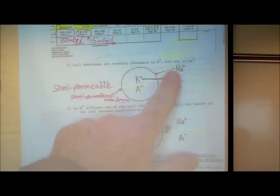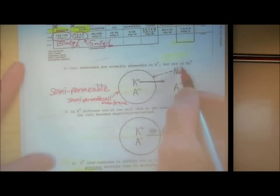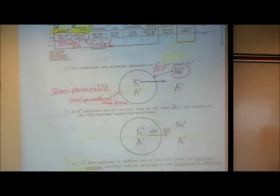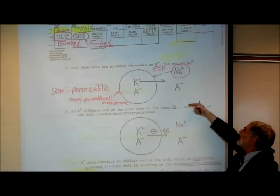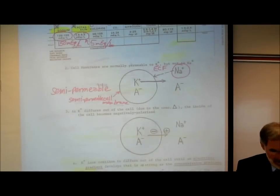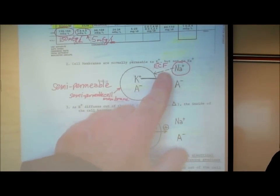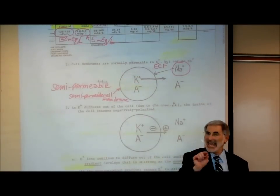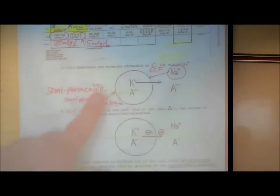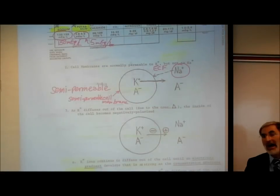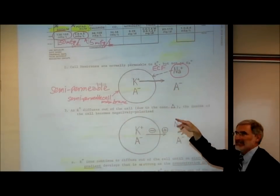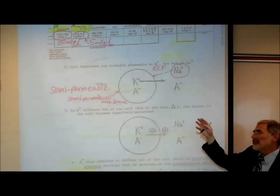The sodium ion channels are normally closed. There's a high concentration of sodium in the extracellular fluid and a low concentration inside the cell, so sodium would like to diffuse into the cell — but it can't because the sodium ion channels are normally closed. Not only are the sodium ion channels closed, but so are most of the other ion channels.